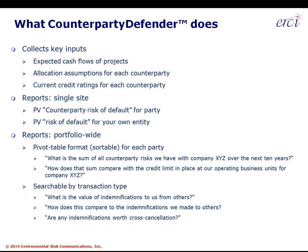Let's cover how Counterparty Defender works. We collect just three key inputs: the expected cash flow of the project or projects, the allocation assumptions as currently understood, and the current credit ratings or identity of each counterparty. From there, ERCI goes away, finds the credit data, and runs it through our forecasting engine. We generate reports on a single-site basis looking at the counterparty risk of default for each individual counterparty, which is part of what's required under ASC 410-30.